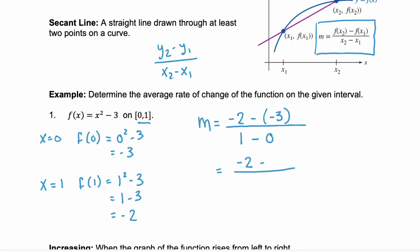Simplify the numerator, negative 2 plus 3, and our denominator 1 minus 0 is 1. Negative 2 plus 3 is 1 over 1, and that simplifies to 1. So the average rate of change for this function f(x) on the interval [0,1] would be the value 1.